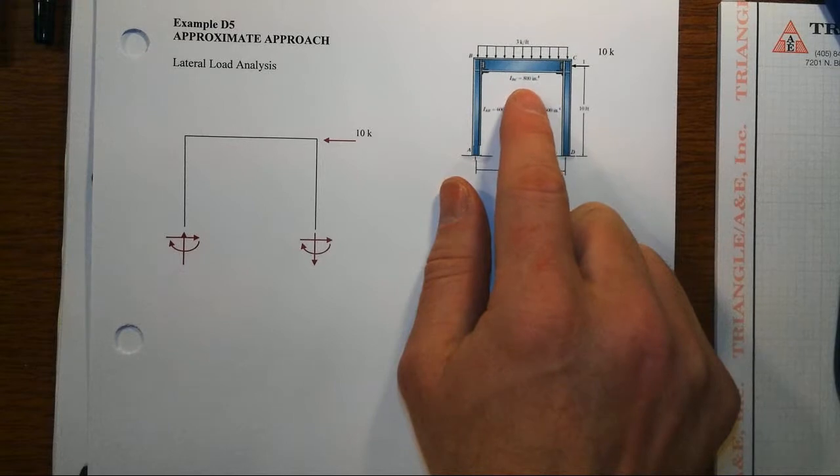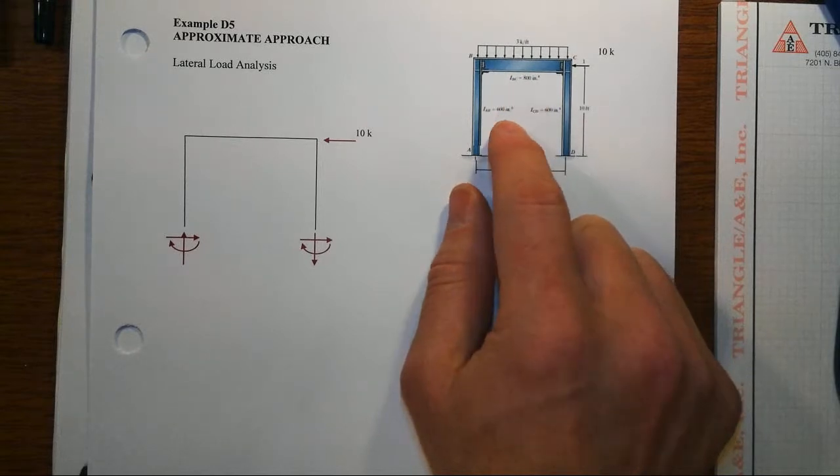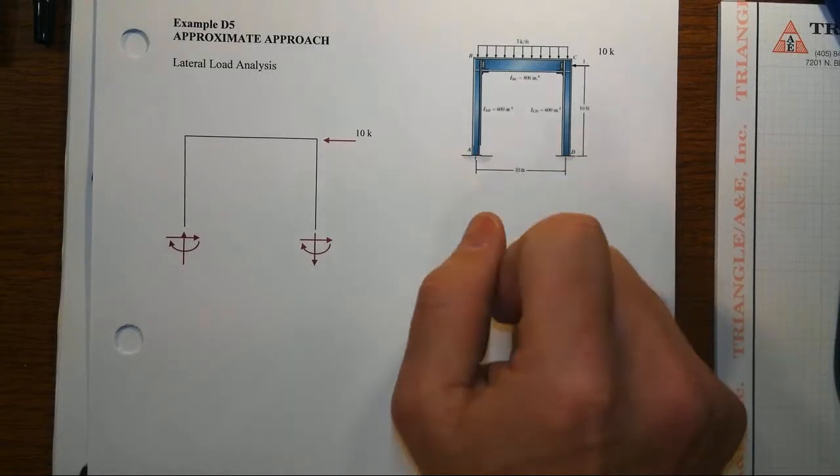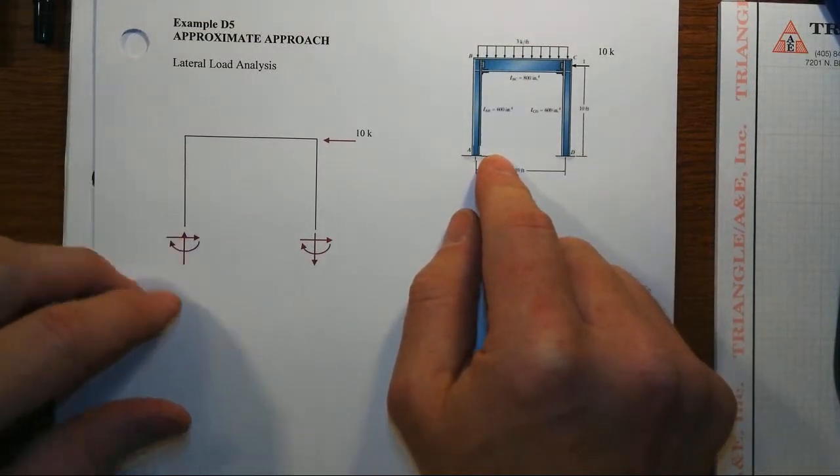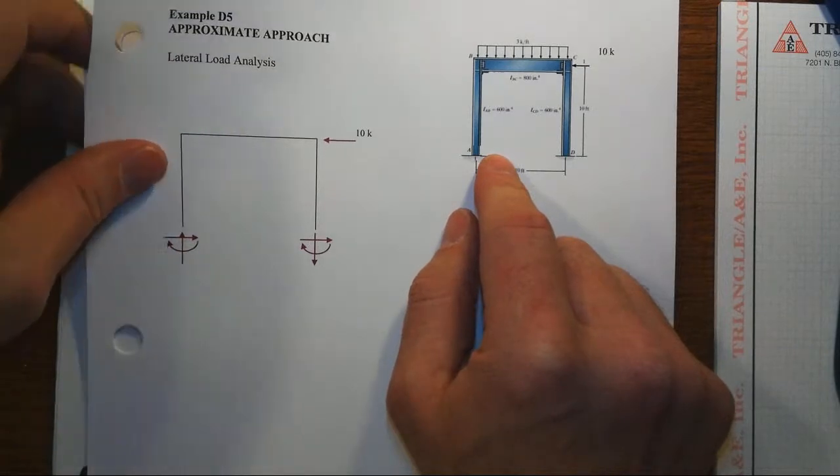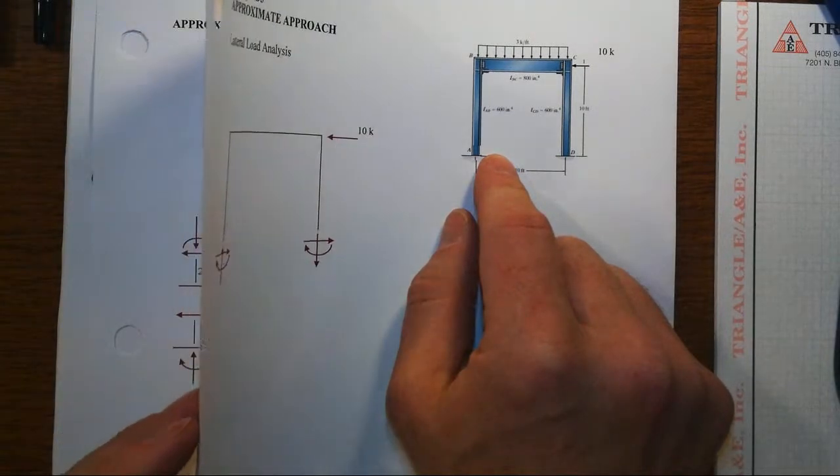The beam has 800 inches to the fourth for its second moment of area, columns are identical at 600 inches to the fourth. We've looked at it in other videos about how to approximate the behavior of this system.